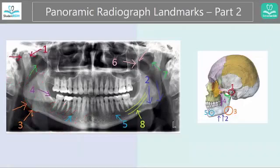Number four indicates this little area you see here on the skull. This is called the external oblique ridge, and this is the opaque — meaning the lighter area — on your radiograph here.